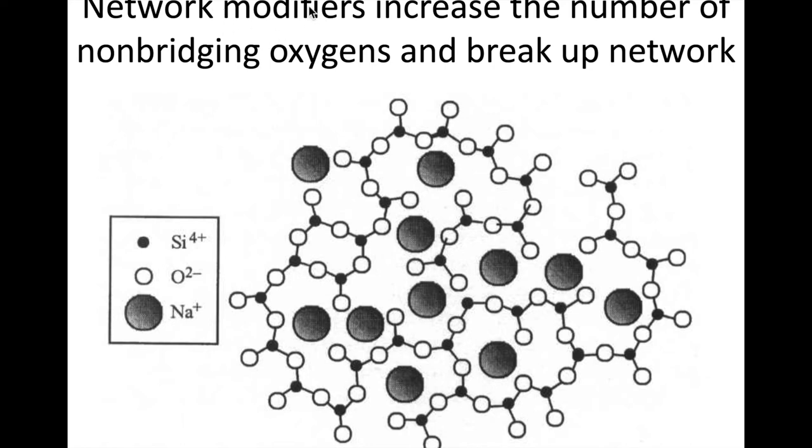But network modifiers are those alkali, alkali earth metals that increase the number of non-bridging oxygens or NBOs and they break up the network. So basically sodium in this case is acting in that role. Any time a sodium comes in, it breaks up the bridged oxygens and you get a more broken up network. So that's important because it makes it harder to crystallize and therefore easier to become an amorphous silicate or a glass. And so increasing these modifiers makes it easier to form a glass and also does it at lower temperatures, making it more economical.